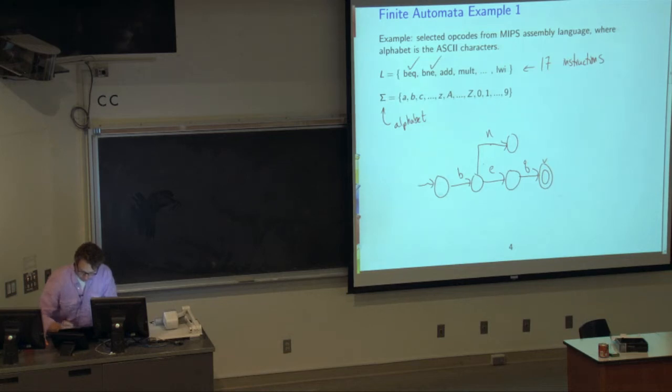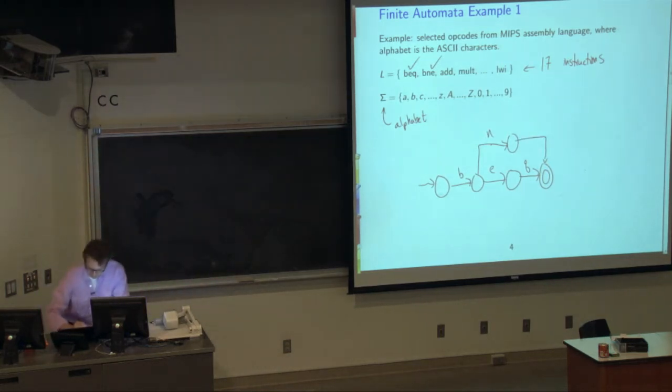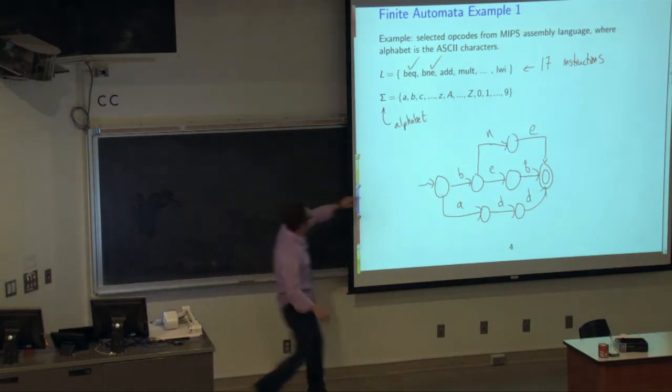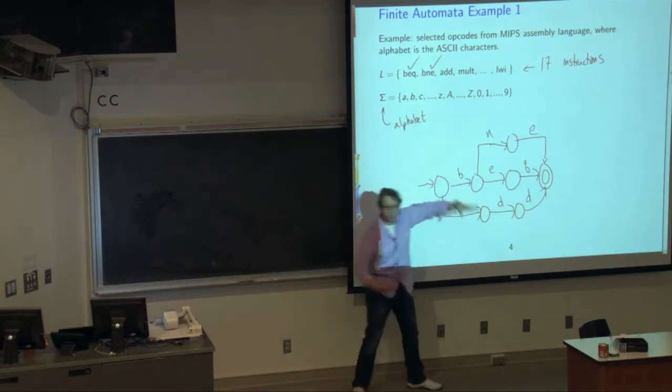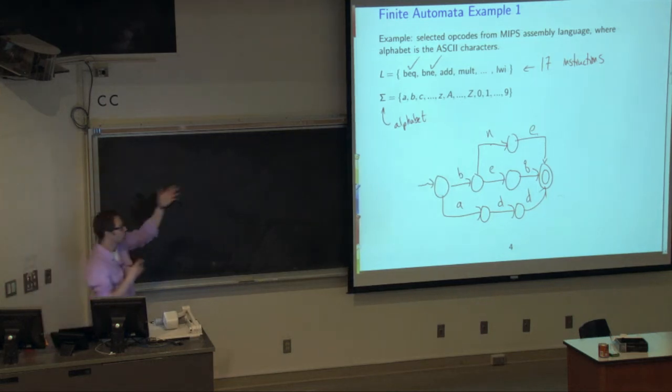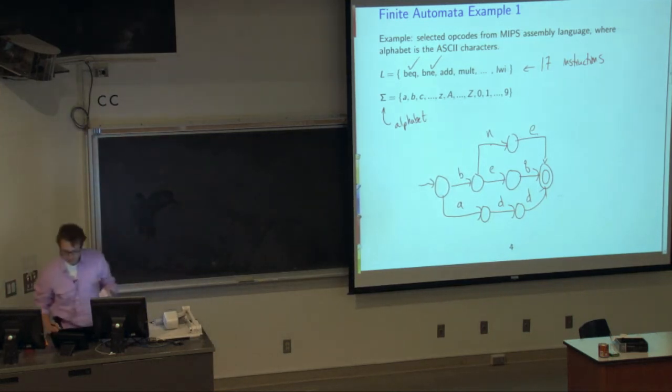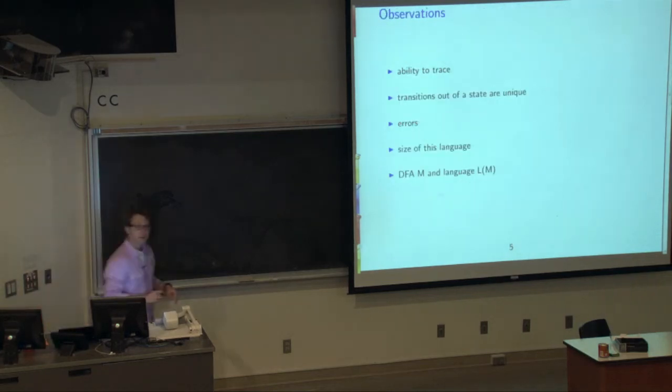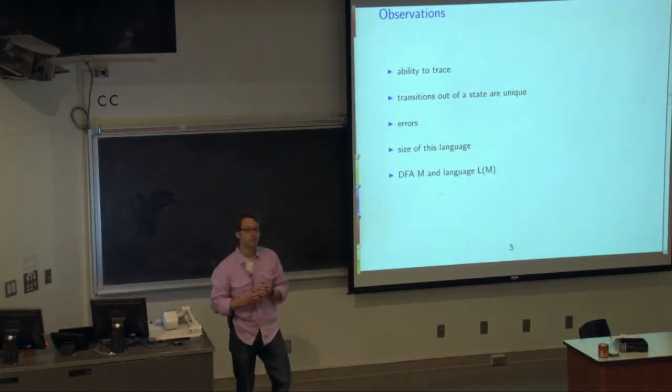So we've got those. And we could continue to add things like add. Notice that add doesn't have any duplicate of the previous thing. So we could continue to add these. And we're going to get this finite automata that's pretty big by the end, with all of those 17 different words in it. So this gets big. I've got lots of things coming out like that. So one question on that.